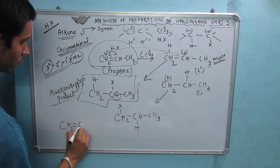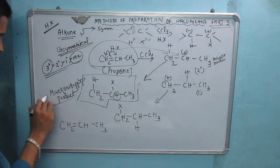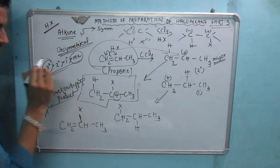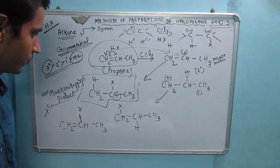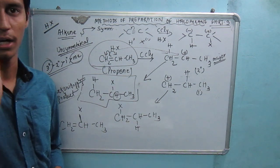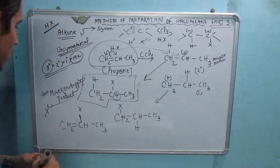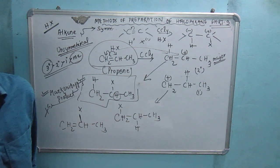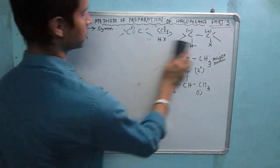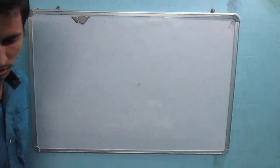The halogen acid adds such that the negative part — the halide — attaches to that carbon which has fewer hydrogens, as per Markovnikov's rule. Hydrogen attaches to the carbon with more hydrogens. However, in the presence of peroxide, the anti-Markovnikov addition occurs — we add in the presence of peroxide (peroxide presence).